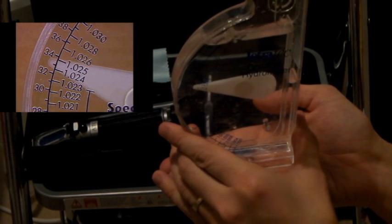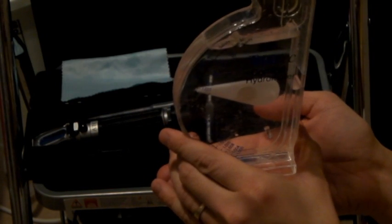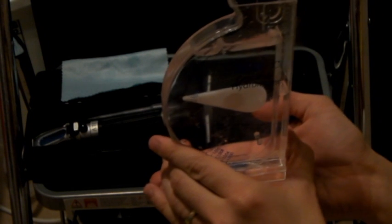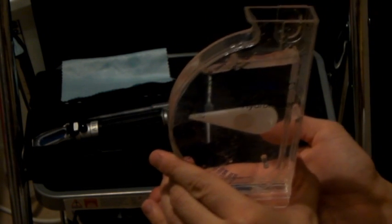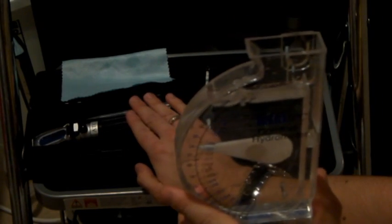As you can see, this is bobbing between 1.024 and 1.025. Now, we know the correct reading is 1.024 because we've just used the refractometer. So this is a little high.